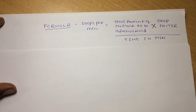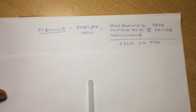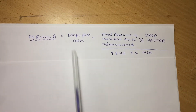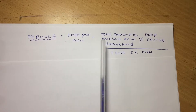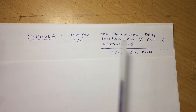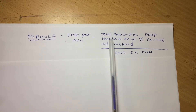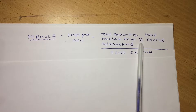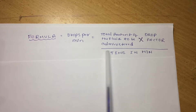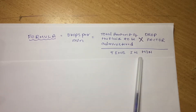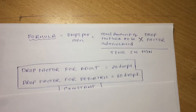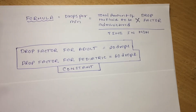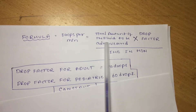We should know about the formula. The drops per minute formula is: drops per minute equals the total number of fluid to be administered, multiplied by the drop factor, divided by time in minutes.